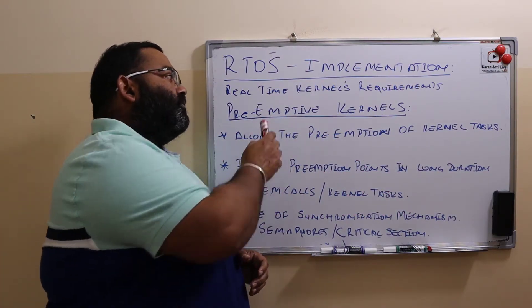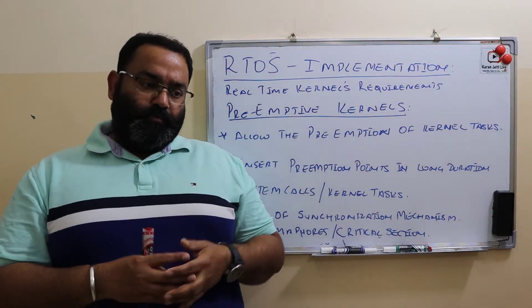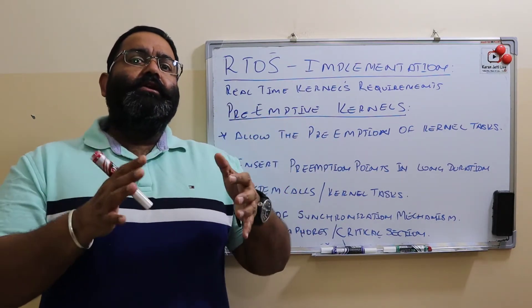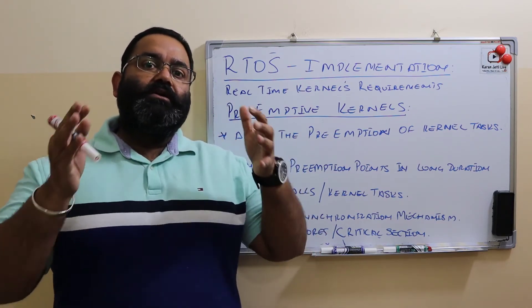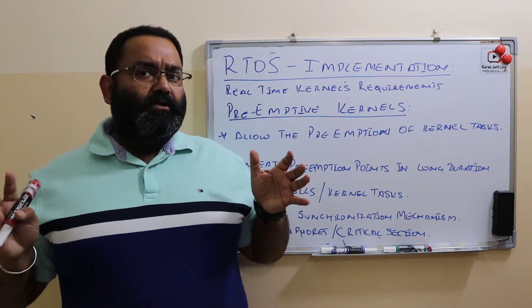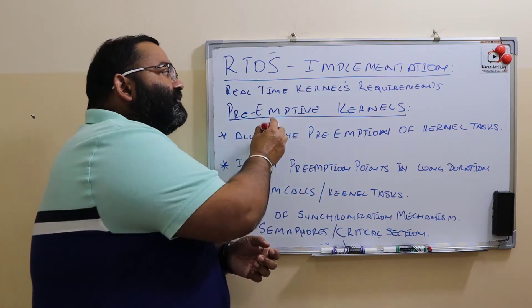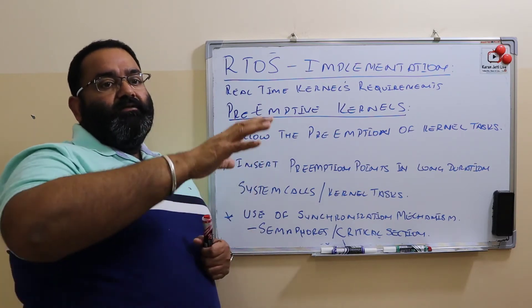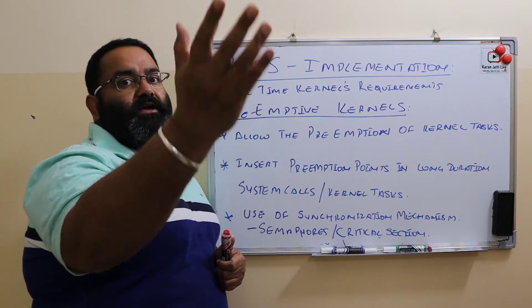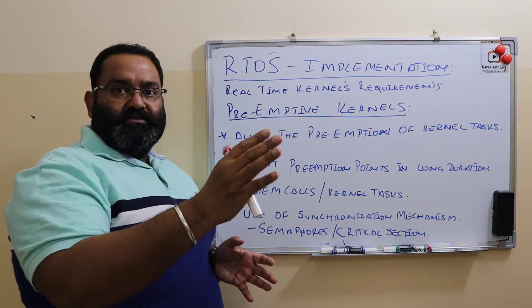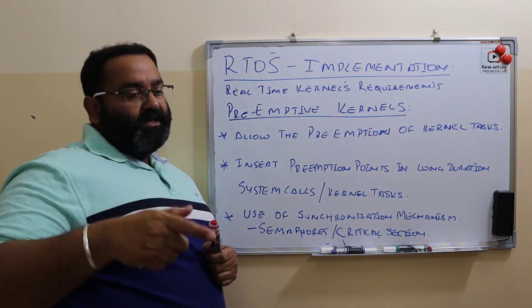The second requirement is preemptive kernels. The scheduling we just discussed is mainly used for user tasks. When it comes to system tasks or kernel tasks, it is normally not preemptive. But when implementing a real-time operating system, the kernel tasks should also be made preemptive — meaning when a system call is executed, if needed we can preempt it and move to other calls.